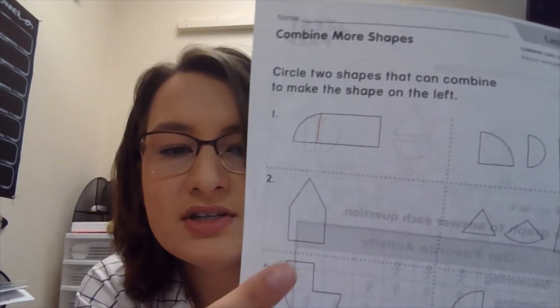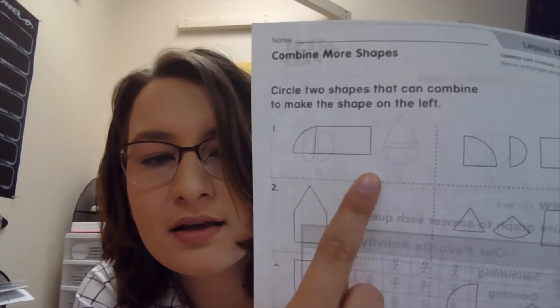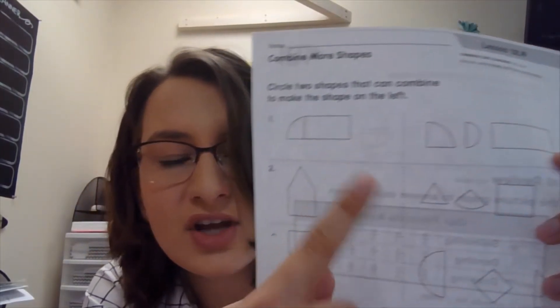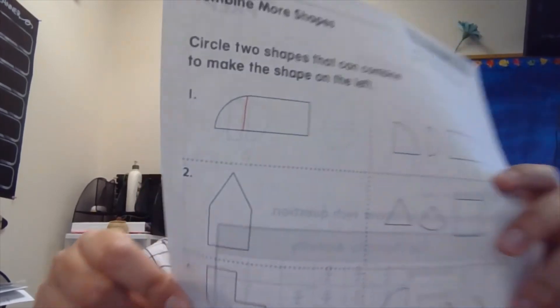The first one says circle two shapes that can combine to make the shape on the left. So looking at these shapes, if I were to draw a line right here, you see the two shapes that there would be this shape and there would be this shape. So I would circle those two shapes. So try to do that as we go on here.